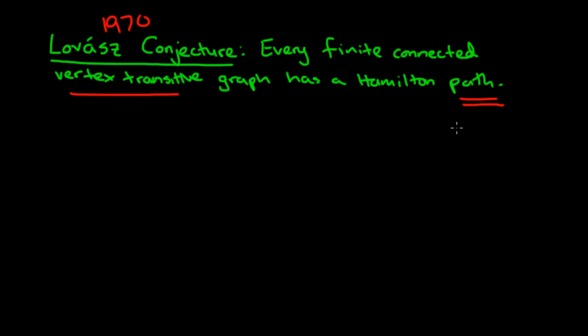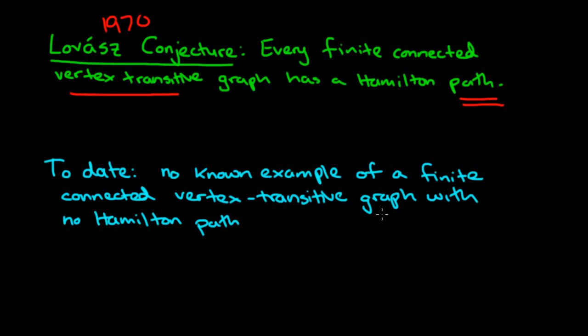So if this is unfamiliar, please revisit the video on the Lovász conjecture about Hamilton paths. And it's important to point out that, to date, no known example of a finite connected vertex transitive graph with no Hamilton path would exist.